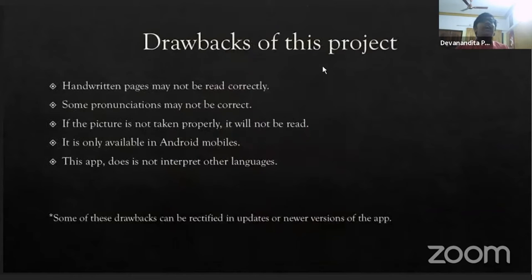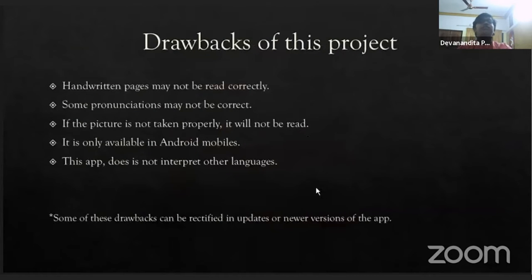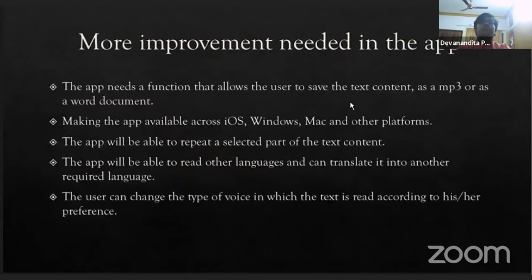The drawbacks of this project are that handwritten pages may not be read correctly, some pronunciations may not be correct, if the picture is not taken properly the text will not be read, and it is currently only available on Android. The app does not support other languages. However, some of these drawbacks can be rectified in updates or new versions. Improvements I think are needed include a function that allows users to save content as an MP3 or Word document, and making the app available across iOS, Windows, Mac, and other platforms.